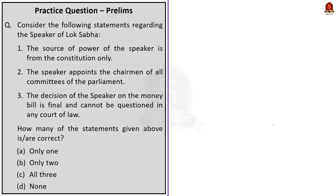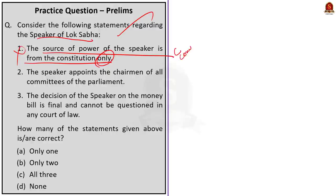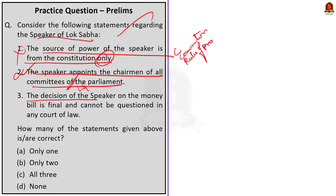Now for the preliminary practice question discussion. The first question is about the Speaker of Lok Sabha. Statement one says the source of power of the speaker is from the Constitution only — this is incorrect because the speaker derives power from three sources: the Constitution, rules of procedure of Lok Sabha and parliamentary conventions. Statement two says the speaker appoints the chairman of all committees of the parliament — this is incorrect because he can appoint only members of Lok Sabha committees, not the entire parliament. Statement three says the decision of the speaker on a money bill is final and cannot be questioned in any court of law — this is incorrect as it is open to judicial review since the Kihoto Hollohan case verdict of the Supreme Court. So the correct answer is option D — none of the statements are correct.